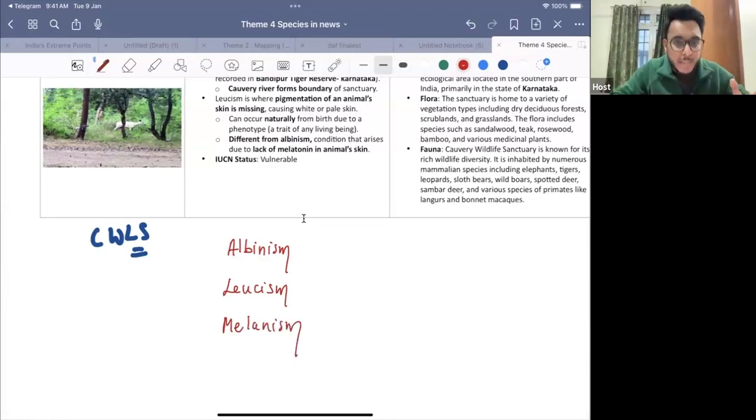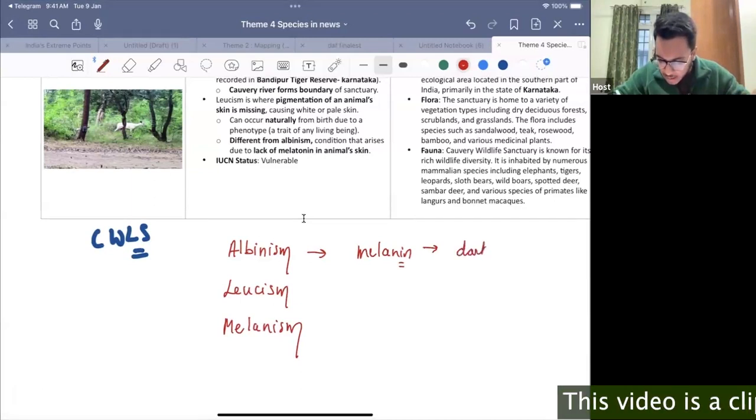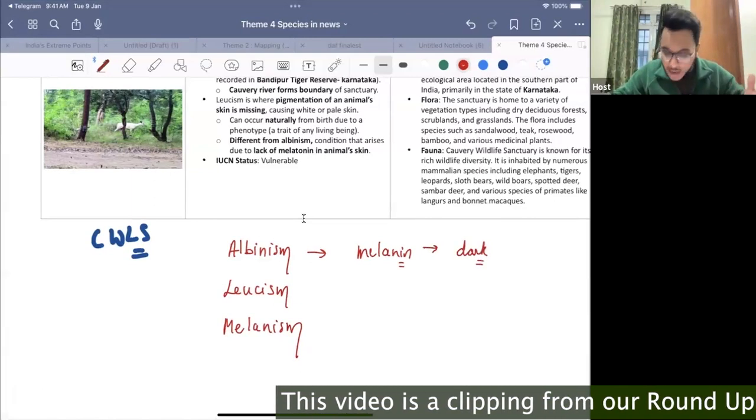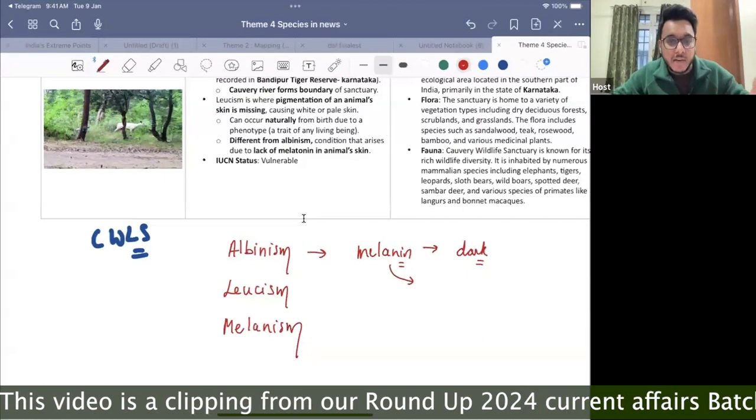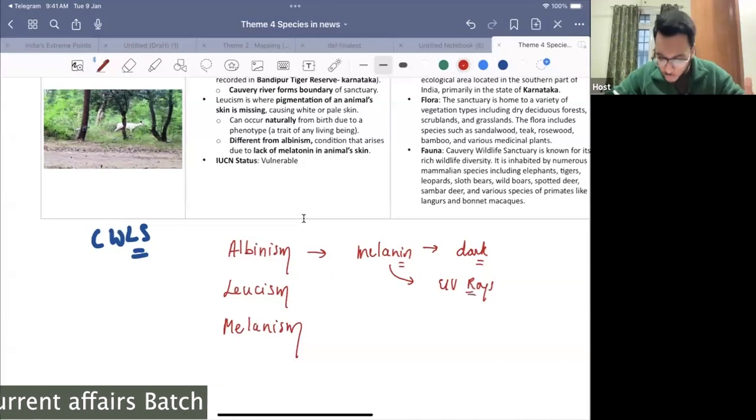Now first of all, what is albinism? Albinism is a condition when in the body of an animal, melanin is not produced. Now melanin is a particular type of pigment that is produced by the body. And this particular pigment is responsible in giving the dark color or dark tone to our body. And this particular melanin protects our body from the harmful UV rays also. It protects us from harmful UV rays.